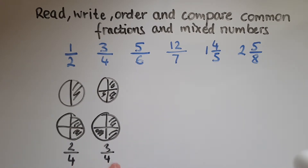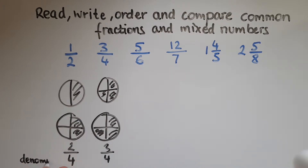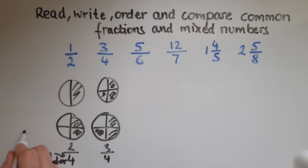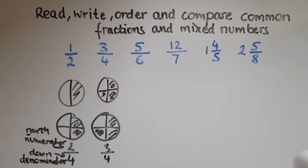The number at the bottom is called the denominator — D for down. The number at the top, or north, is the numerator — easy to remember because they begin with the same letter. So: denominator is down, numerator is north.